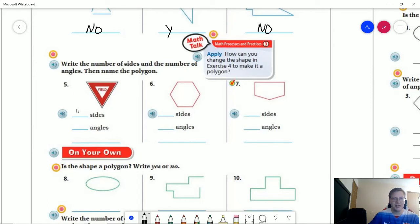Number five we are going to have a triangle which has three sides, three angles. And number six we have a hexagon which is six sides, six angles. Number seven we have a pentagon which has five sides, five angles.